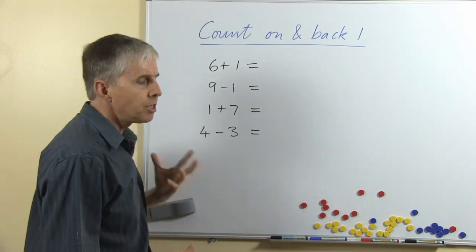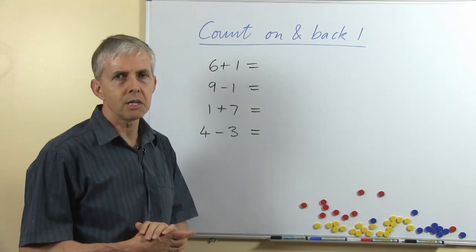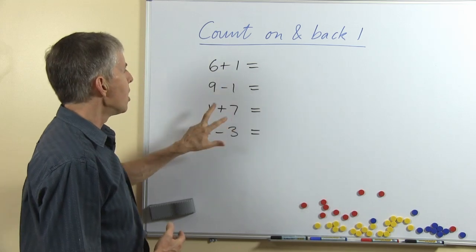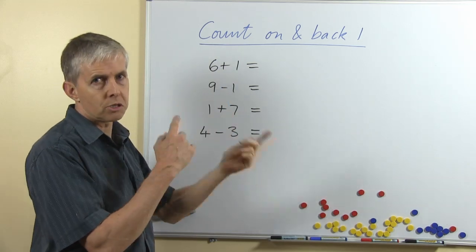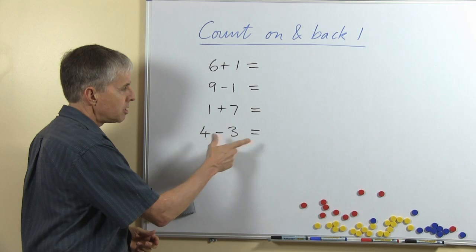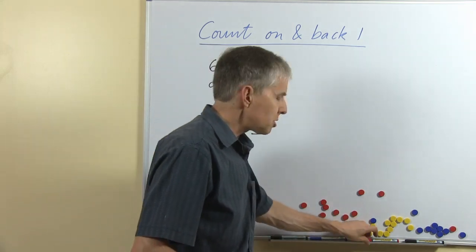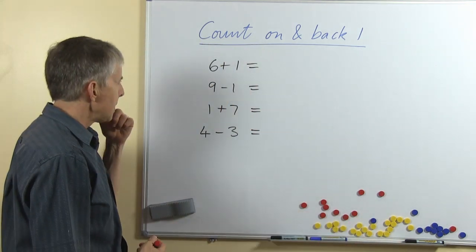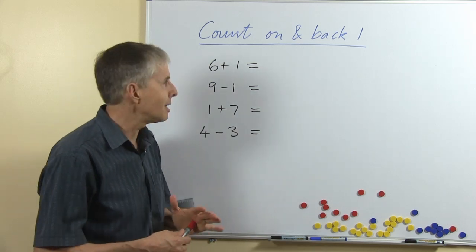So these four different sorts of questions that you'll see on the worksheets: adding one, taking away one, start with one so it's a turnaround fact, and find a difference of one. So I'll just talk about these briefly and give some suggestions here.